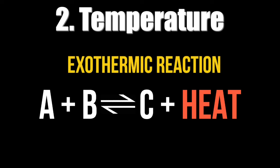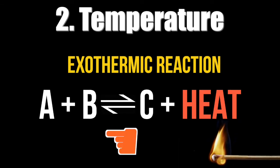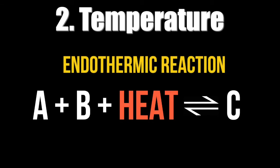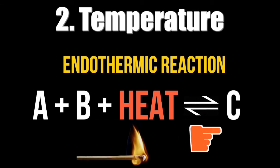In the exothermic reaction, if the temperature is increased, the equilibrium will shift to the left. If a chemical reaction absorbs heat, heat is considered a reactant. This reaction is called an endothermic reaction. In the endothermic reaction, if the temperature is increased, the equilibrium will shift to the right.